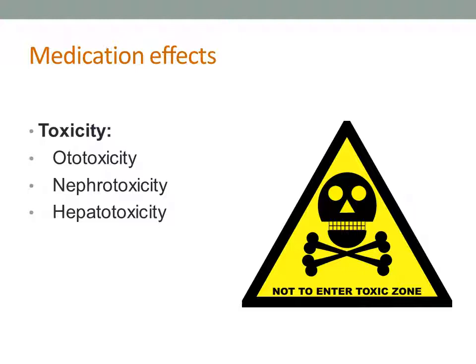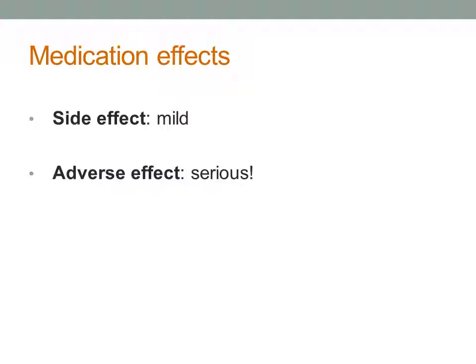Jaundice or yellowing of the skin and eyes may be seen with hepatotoxicity. When a medication is approved and goes on the market, the drug manufacturer has to list all its known side effects. Every medication has side effects, and these are usually mild and allow the patient to continue taking the medication. Nausea, vomiting, and constipation are examples. Many times we can work with these side effects through changes to diet or activity. It's important to note that nausea is not an allergic response — it's a side effect.